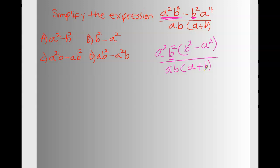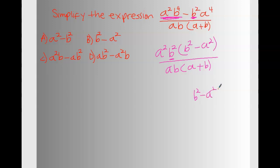Looking at the denominator, we realize this expression ends up not in a fraction, so that means something has to cancel. We look here — this is the difference of two squares: B squared minus A squared. So we can use that idea. B squared minus A squared is the same as (B plus A) times (B minus A). We can substitute this one for that one.